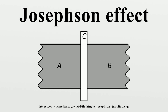It is named after the British physicist Brian David Josephson, who predicted in 1962 the mathematical relationships for the current and voltage across the weak link. The DC Josephson effect had been seen in experiments prior to 1962, but had been attributed to supershorts or breaches in the insulating barrier leading to the direct conduction of electrons between the superconductors. The first paper to claim the discovery of Josephson's effect, and to make the requisite experimental checks, was that of Philip Anderson and John Rowell.